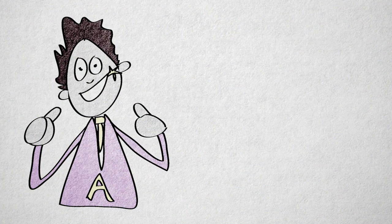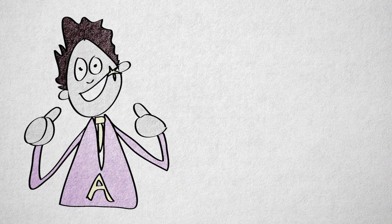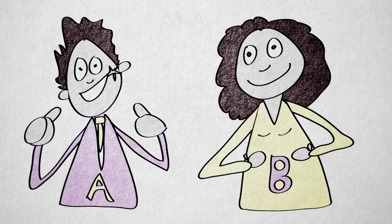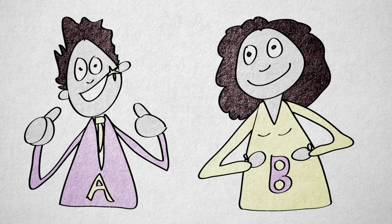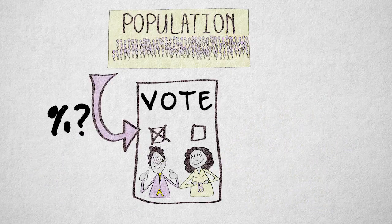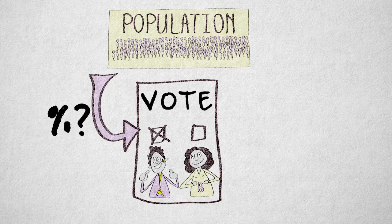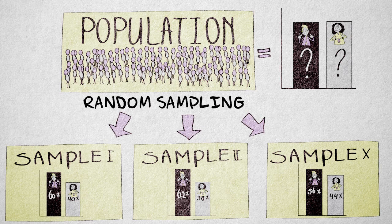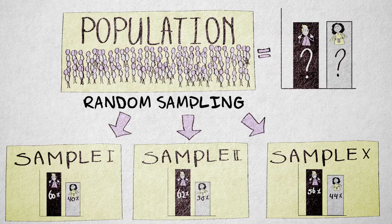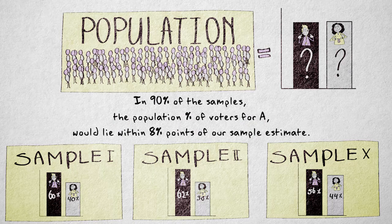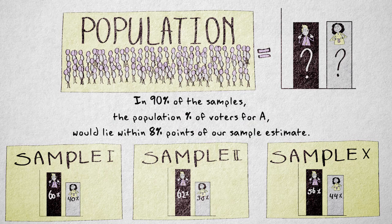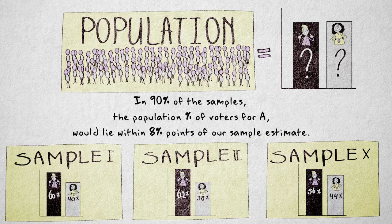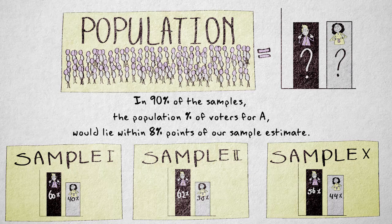Consider an election between conservative candidate A and Democratic candidate B. We want to estimate the proportion of people in the population that will vote for candidate A as accurately as possible. Random sampling allows us to make statements such as this: If we were to sample voters repeatedly, then in 90 percent of the samples, the true population proportion of votes for A would lie within 8 percentage points of our sample estimate.